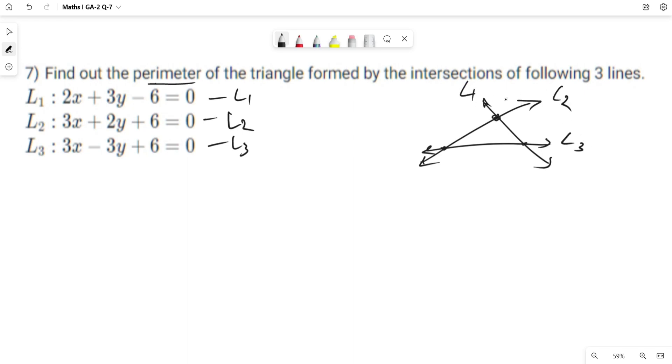Let us name the intersection of L1 and L2 as point A, L2 and L3 as point B, and L1 and L3 as point C.